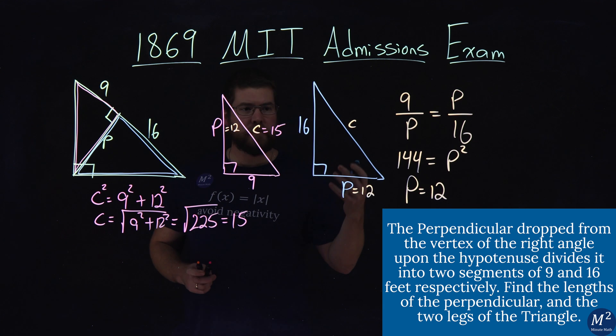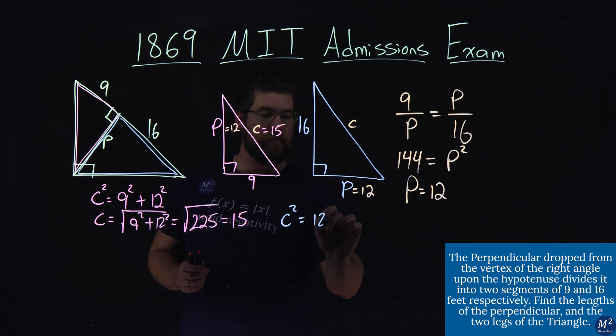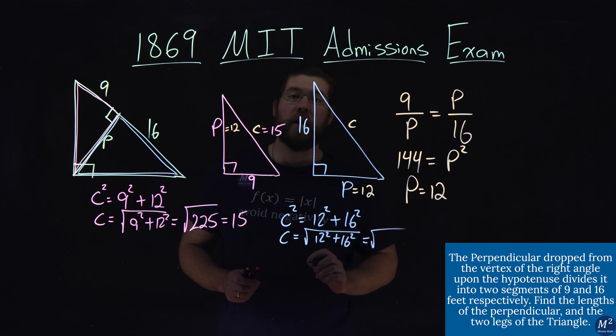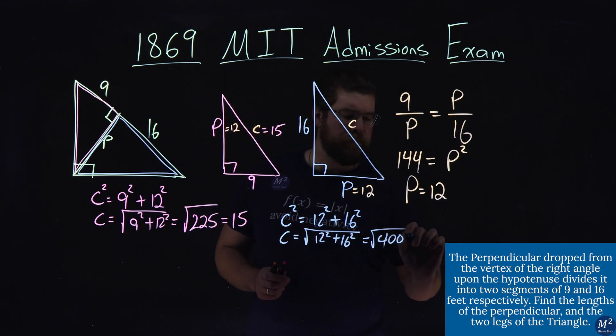The other one we found, the blue, same idea. c squared is equal to our 12 squared plus 16 squared. Again, that means c is equal to the square root of 12 squared plus 16 squared. And that equals to the square root, 12 squared plus 16 squared comes out to be 400. And the square root of 400 is 20.